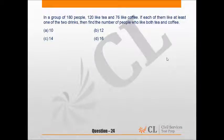Let us look at question number 24. In a group of 180 people, 120 like tea and 76 like coffee. If each of them like at least one of the two drinks, then find the number of people who like both tea and coffee.